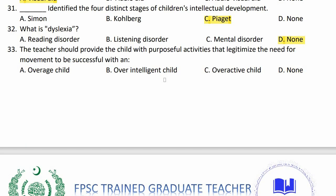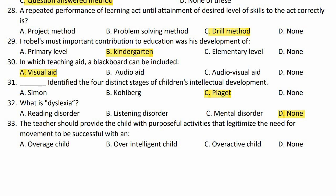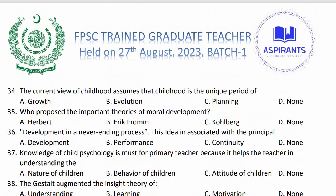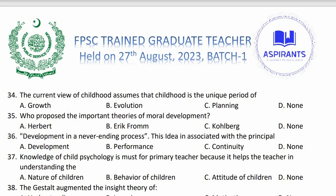The teacher should provide the child with purposeful activities that legitimize the need of movement. Who are these children — our age children, our intelligent children, our active children, or none of these? The right option is our age children, who have the best learning.